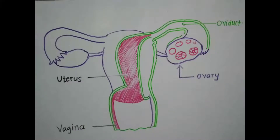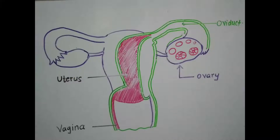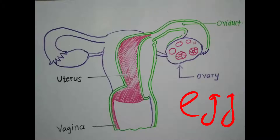This is a diagram of the female reproductive system. If you see the diagram carefully, you will find there is a pair of ovaries. The female reproductive system produces an egg as the female gamete — the egg is also called ovum. This ovum or egg is produced in the ovary every month.